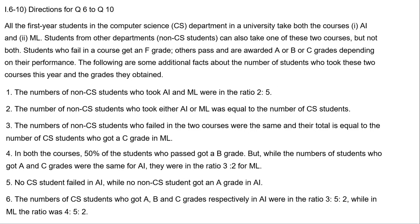All the first year students in the computer science department — CS — in a university take both courses AI and ML. Students from other departments can also take one of these two courses, but not both. Students who fail in a course get an F grade; others pass and are awarded A, B, or C grades depending on their performance.